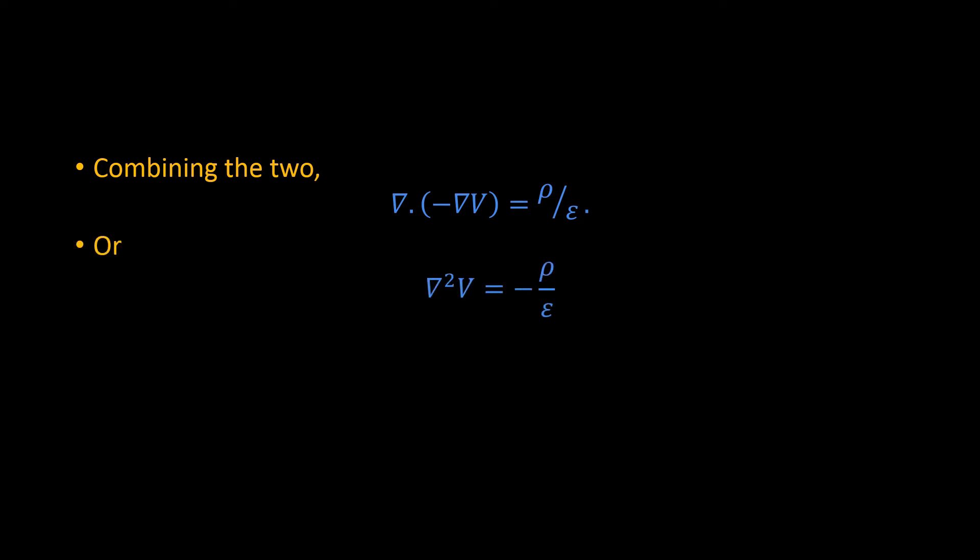And del square V equals minus rho upon epsilon naught. We call this equation Poisson equation.